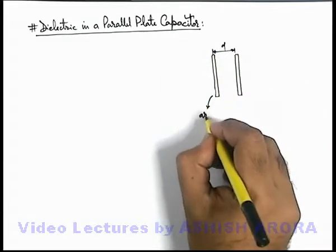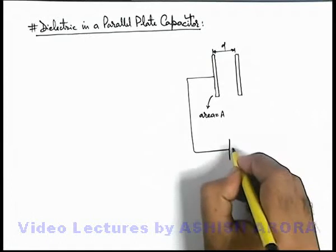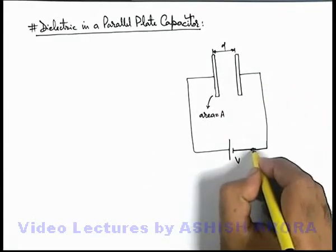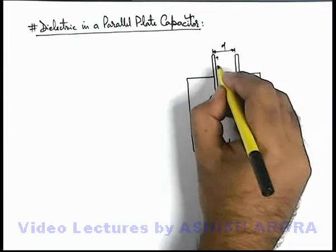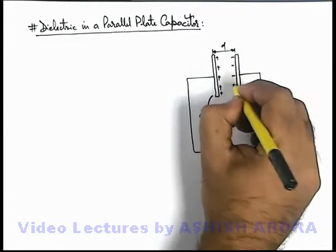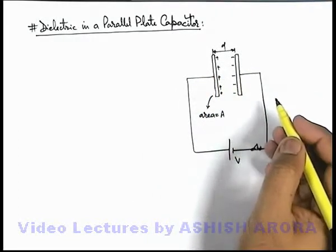Here the area of each plate is A, and this capacitor is connected across a battery of potential difference V. Now we know that if we close down the switch, finally the inner two plates of the capacitor will receive charges by the battery and the outer plate will always carry zero charge.